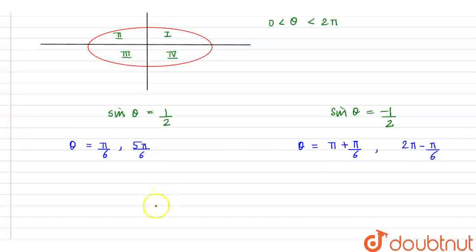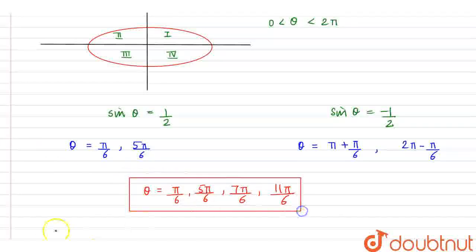Finally, we can say that the values of theta could be equal to π by 6, 5π by 6, 7π by 6, and 11π by 6. Hence, this is our final answer.